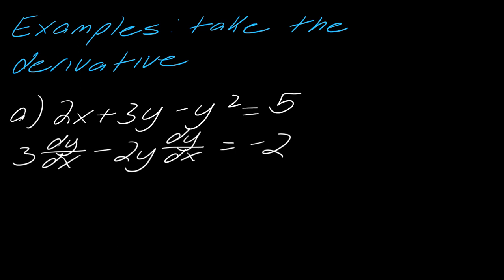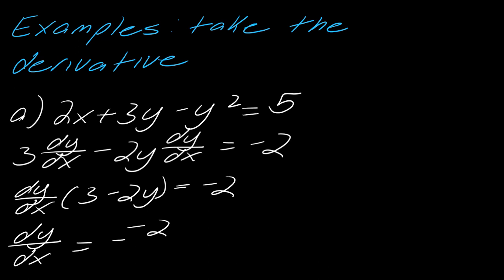Both of these terms have dy dx in common, so you can factor out dy dx. So let me clear some space. And factoring out my dy dx, I get 3 minus 2y. This will now equal negative 2. And now I can just divide out the thing that I need to do so that I get dy dx by itself. So I get negative 2 over 3 minus 2y. And boom, there is your derivative of this function here. So that's how implicit differentiation works.